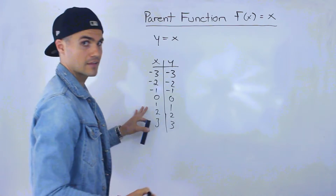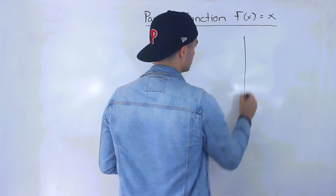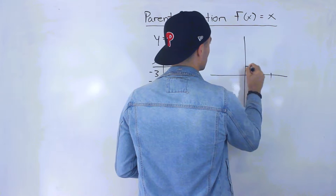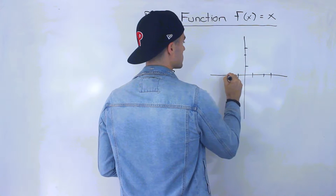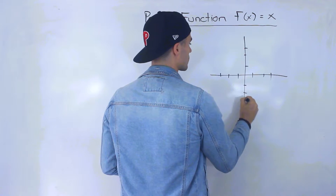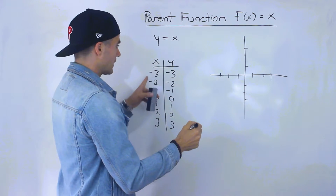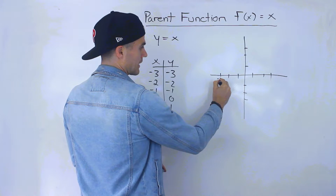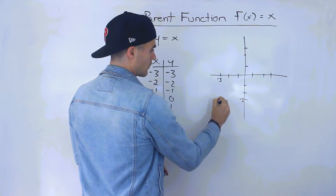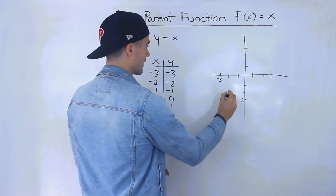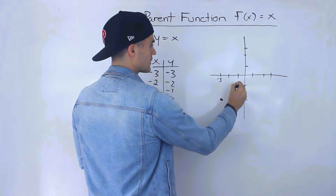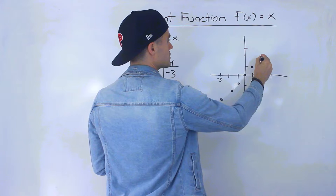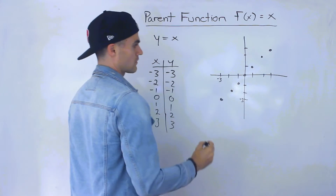If we were to take this and graph it, we'd plot negative 3 and negative 3 over here, then negative 2 and negative 2, negative 1 and negative 1, 0 and 0, 1 and 1, 2 and 2, and 3 and 3.